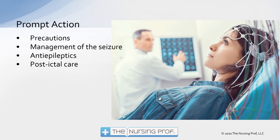Prompt action: what do we want to do for a patient with seizures? We want to take seizure precautions. The main goal is keeping that patient from hurting themselves. Good seizure management includes keeping the patient safe, making sure they don't vomit and aspirate. Provide anti-epileptics — your benzodiazepine — to stop the seizure, and other medications to prevent the next one. In postictal care, remember the patient may have low blood sugar and we want to watch for bradycardia and respiratory arrest from insufficient glucose reaching the brain.